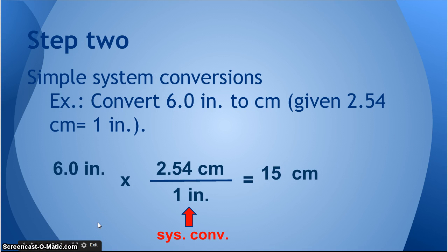Step two. These are simple system conversions. What I mean by that is we're converting from one system of measurement to another, so from the English system to the metric system, for example. Convert 6.0 inches to centimeters, given the fact that 2.54 centimeters is equal to one inch.